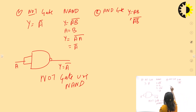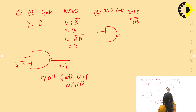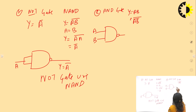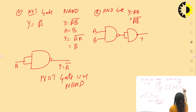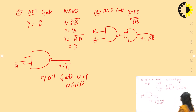It will be designed as: inputs A and B go into a NAND gate, whose output is shorted back through another NAND gate (both inputs shorted). This is how we can design an AND gate using NAND gates.